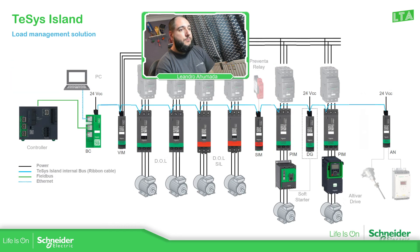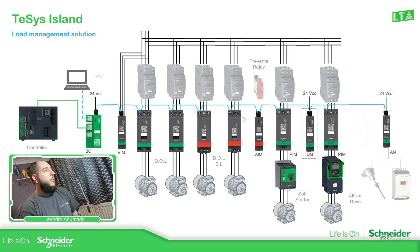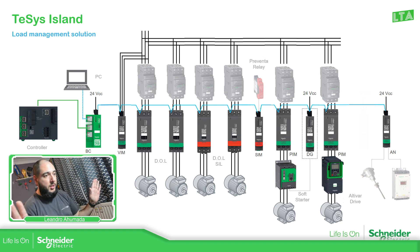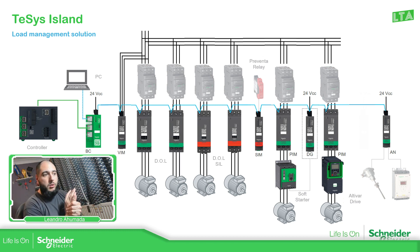Here is a picture showing the different alternatives using different modules for the TeSys Island. At the beginning we have the bus coupler communicating with a PLC — in this case an M262, but it can be any PLC that talks over Modbus TCP, EtherNet/IP, PROFINET, or PROFIBUS. Then we have the voltage interface, which is connected to the motor supply and measures the complete island. If we have different motors using just one voltage interface module, it will cover them all. Then we have the starters.